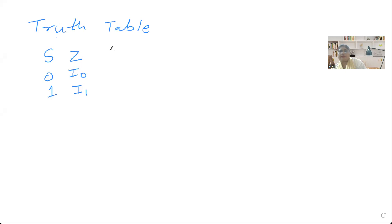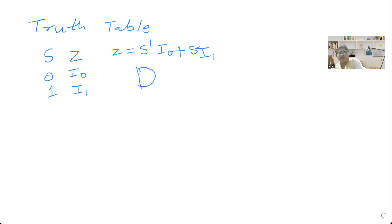We can write the equation: Z is equal to S-dash times I0 plus S times I1. S-dash is used for when the select line S equals 0, and S is used when S equals 1. So two AND gates are required — one for S-dash and I0, and another for S and I1.